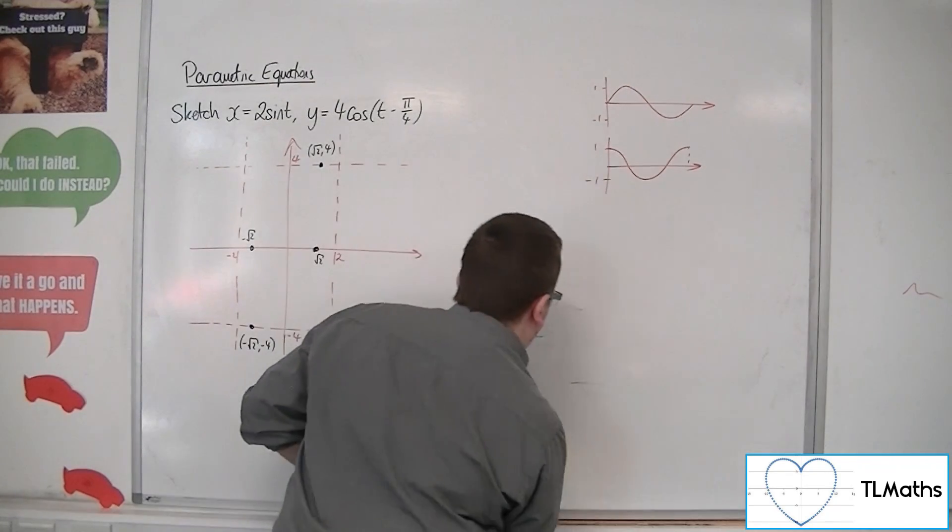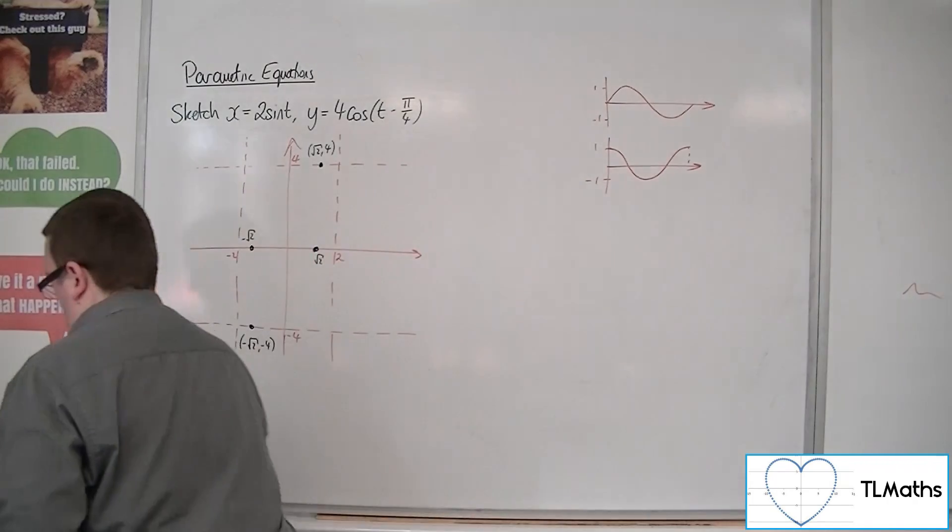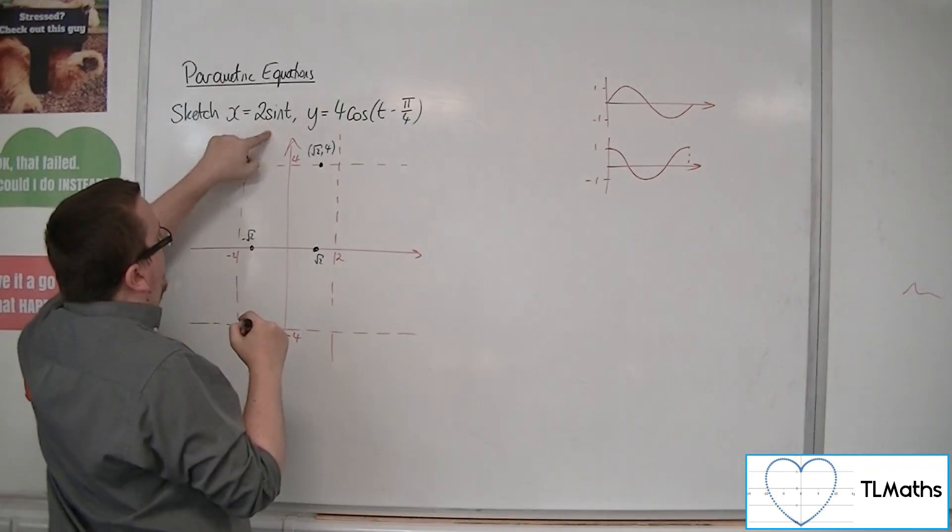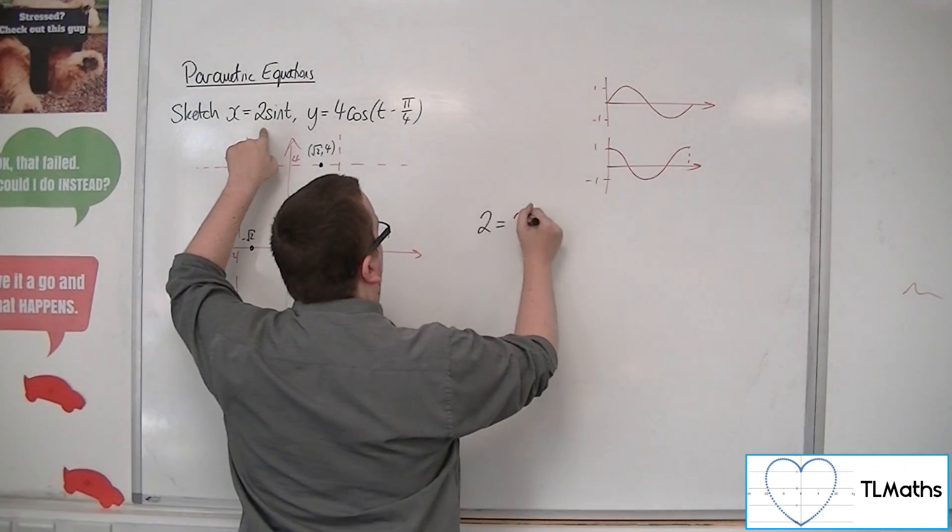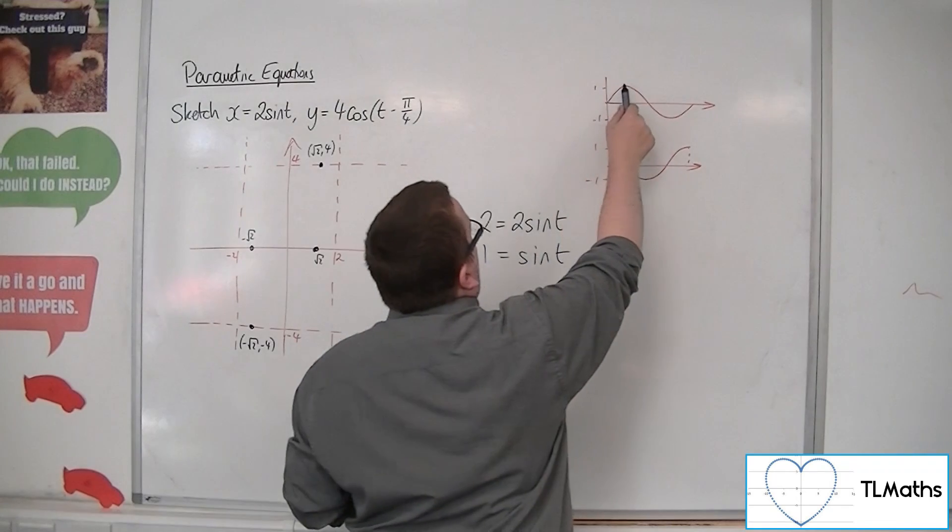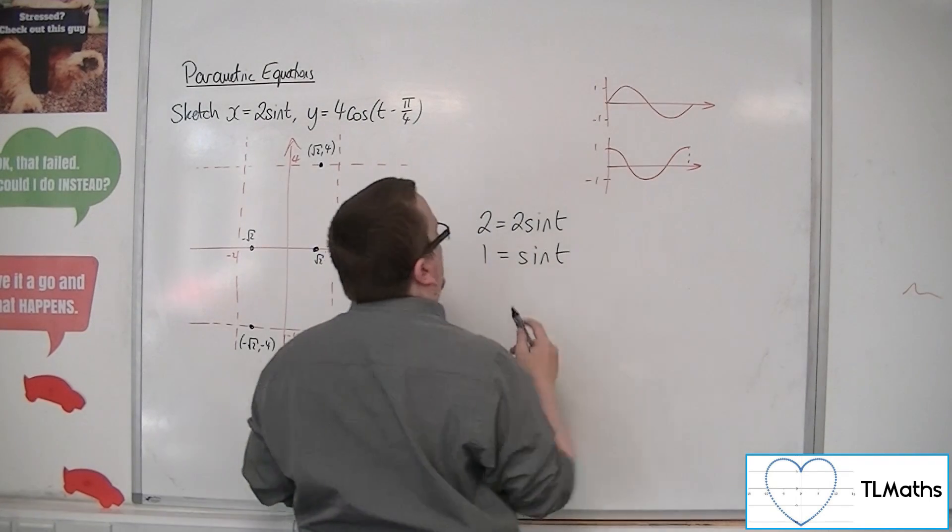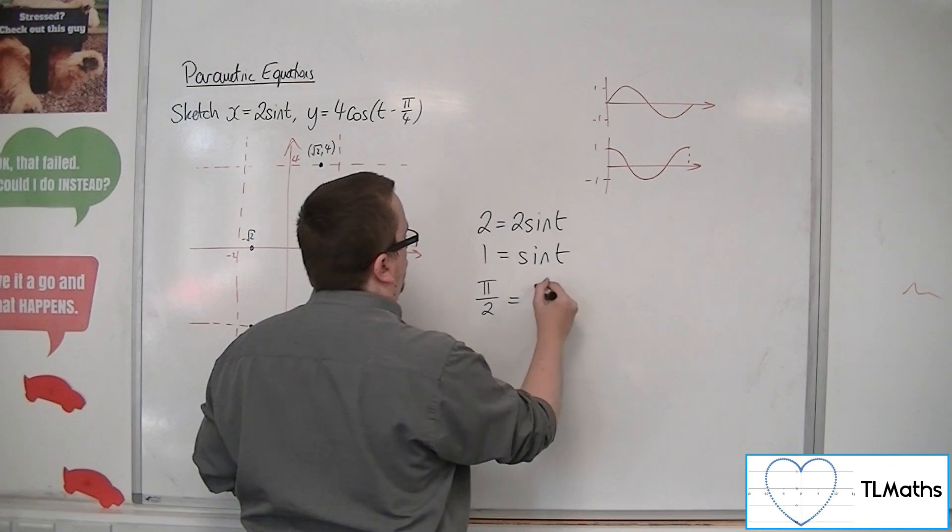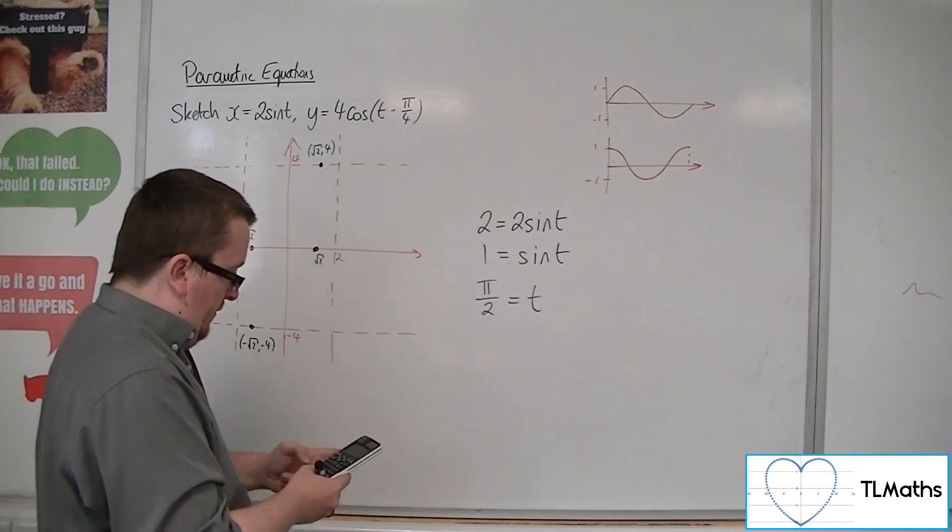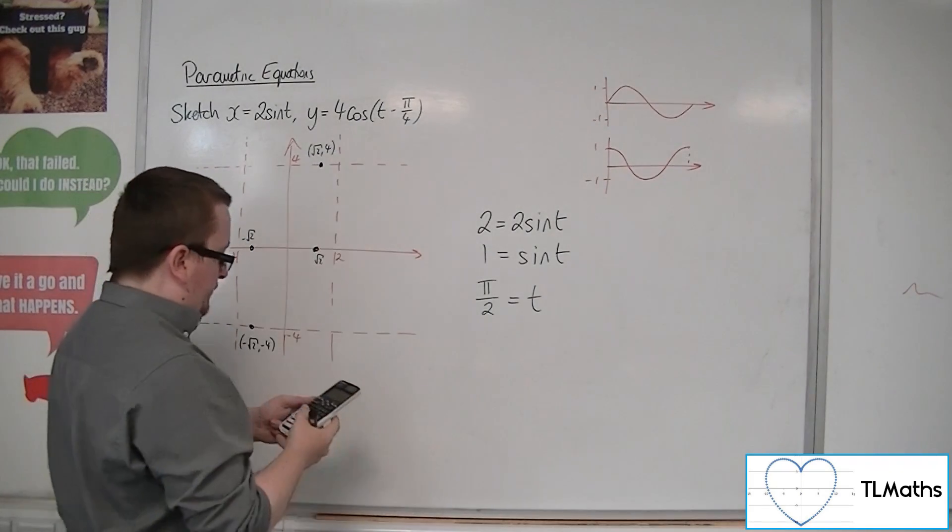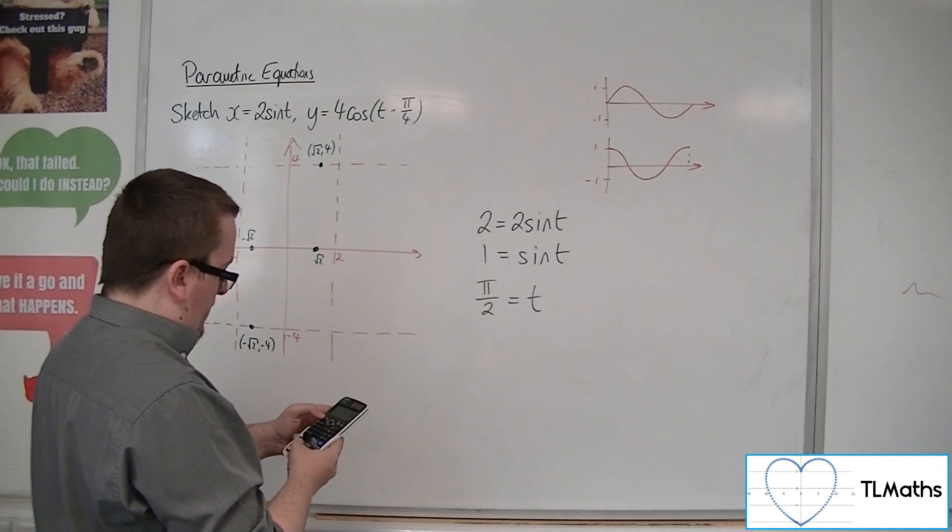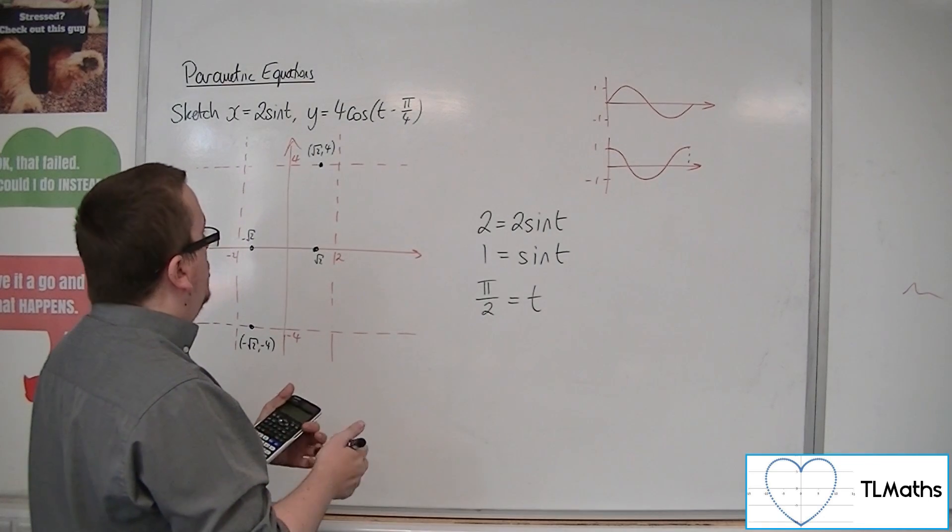Now how about where it maxes out at minus 2 and 2, and where it crosses the y-axis? So now what we can think about is looking at that 2 sine t. So at 2 sine t, I want to know where it's hitting 2. So that's when sine t is 1. Now sine t is 1 is at pi over 2. So t is equal to pi over 2.